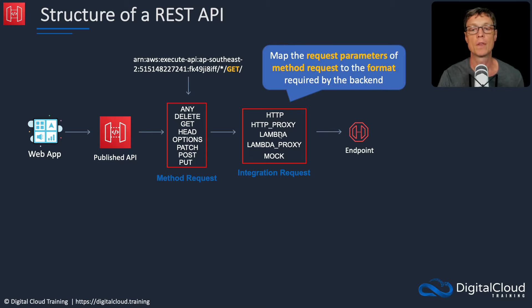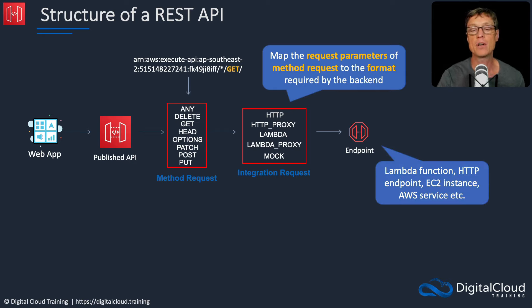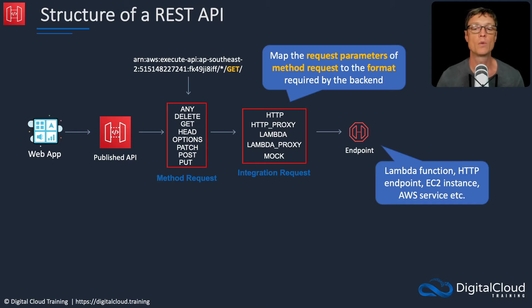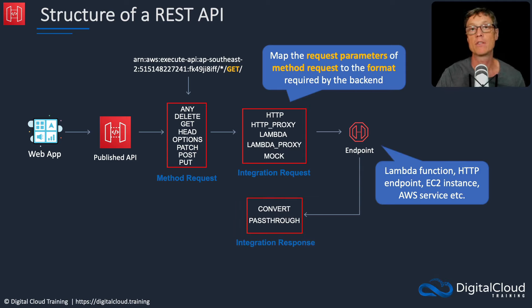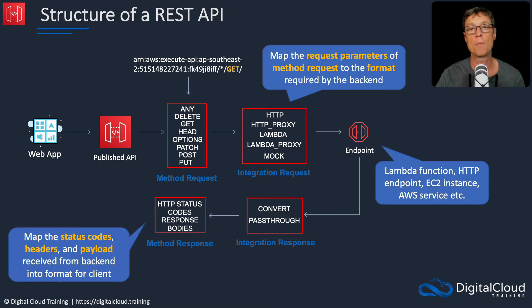For example, you have Lambda or Lambda proxy integrations. We're mapping the request parameters of the method request to whatever format is required by the backend — which could be a Lambda function, an HTTP endpoint, an EC2 instance, or another AWS service. The method request and integration request give flexibility: you can pass through certain methods, or modify something in the payload before it reaches your back end. When the response is returned, you can convert or pass through the information, modify HTTP status codes or response bodies to map them to a format required by the front end, and then the response is returned to the web application.